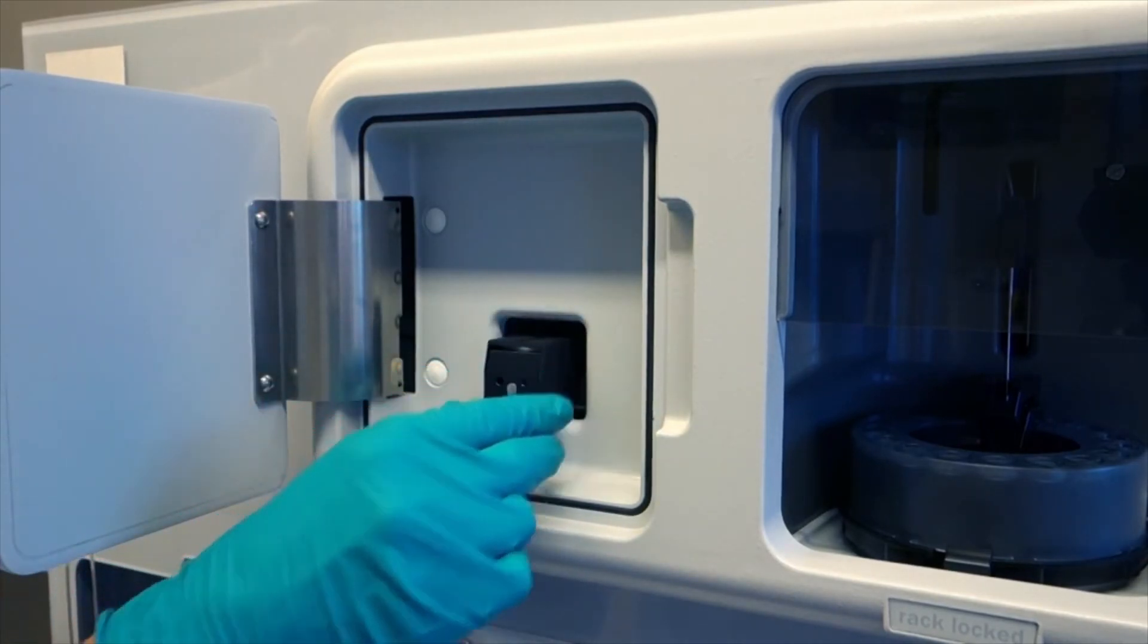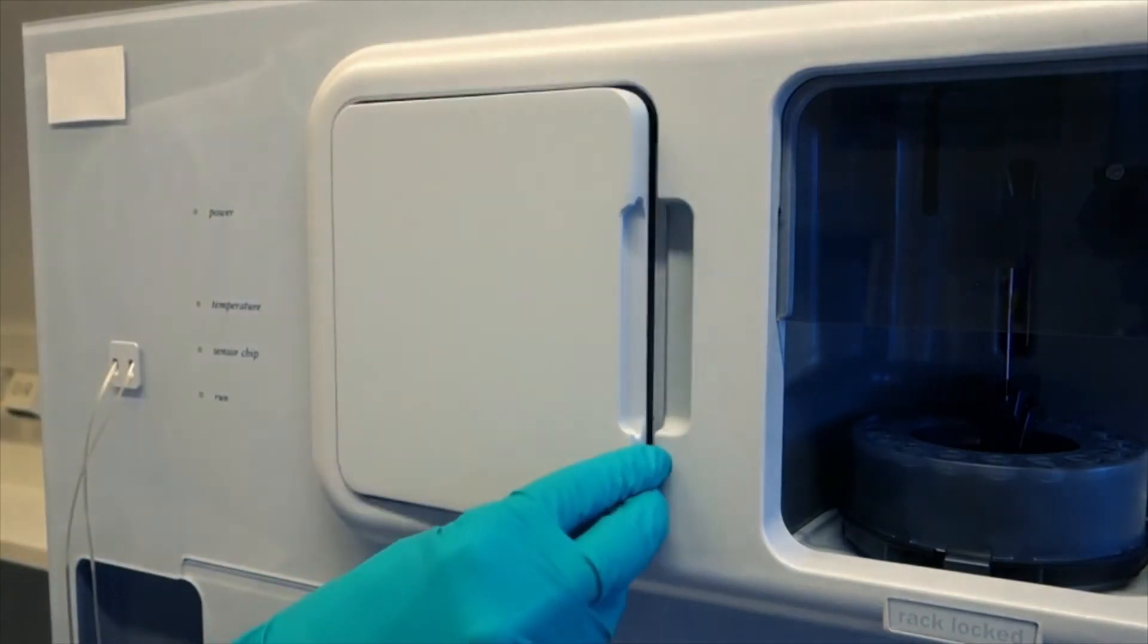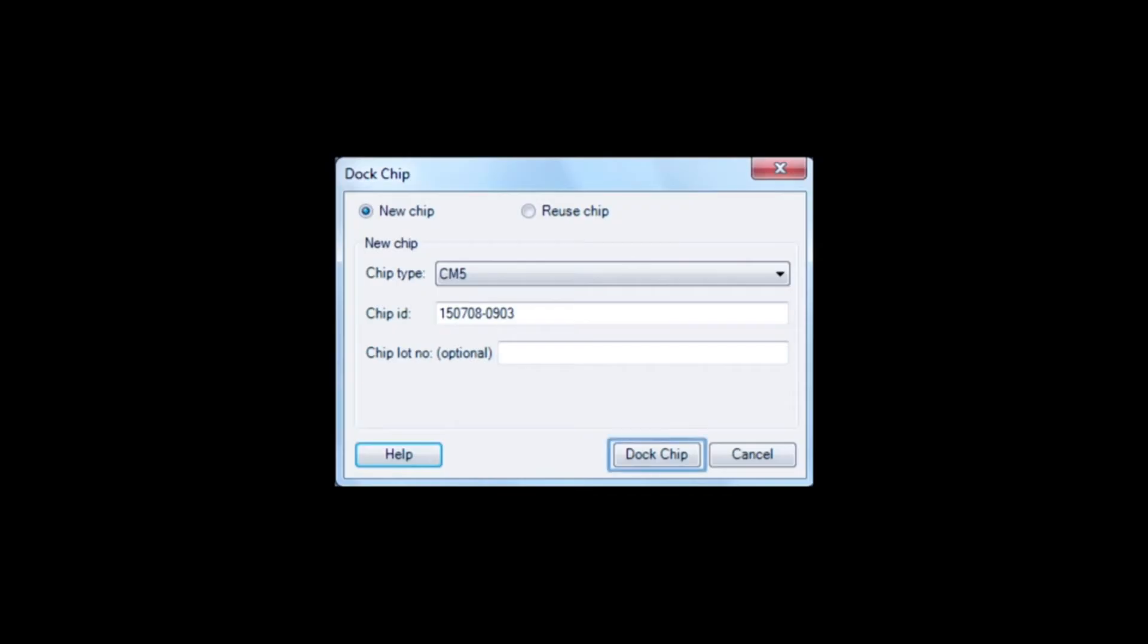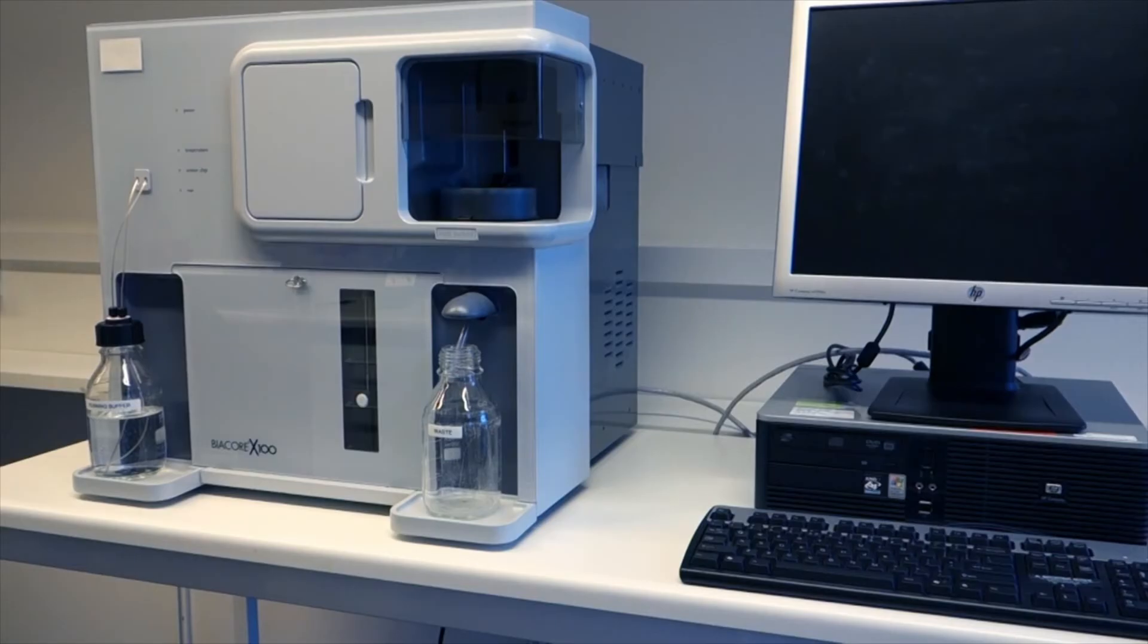Push the chip slide in all the way. Close the front door. Fill in the information in the Dock Chip dialog and click Dock Chip. The chip is docked and the standby flow of buffer over the chip starts automatically.